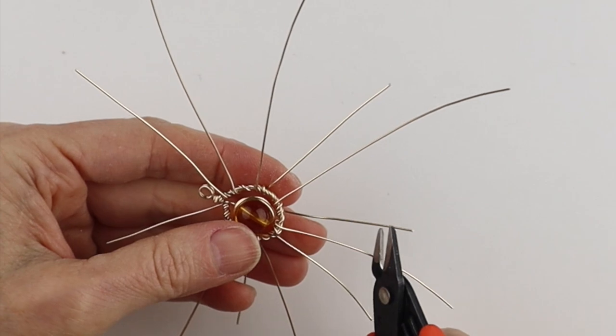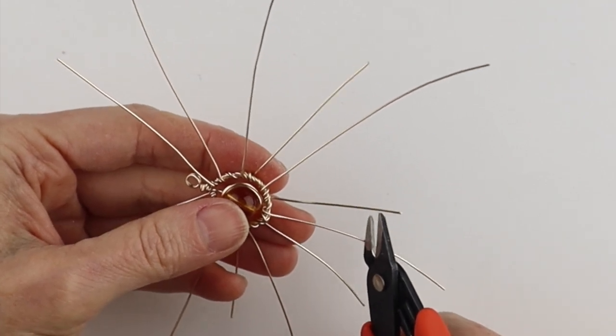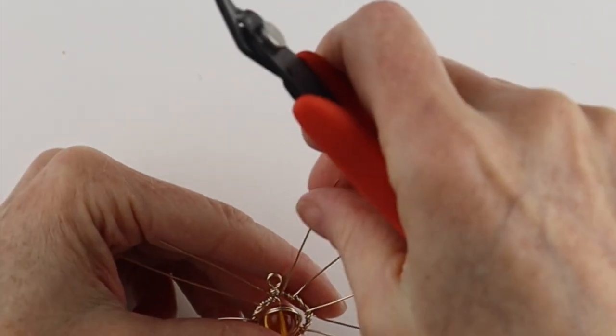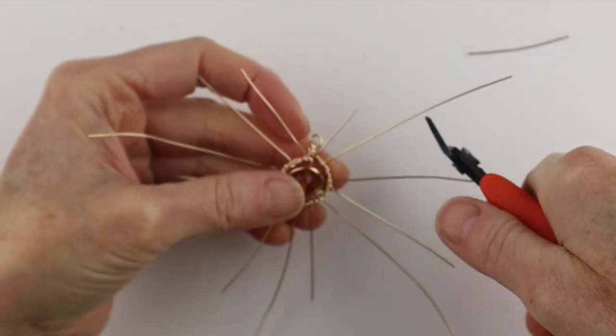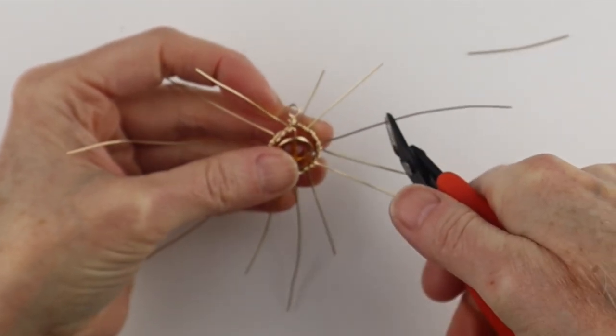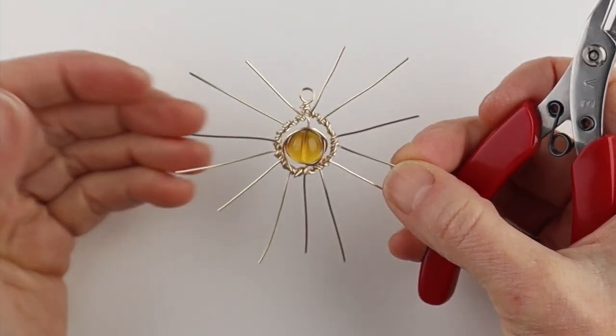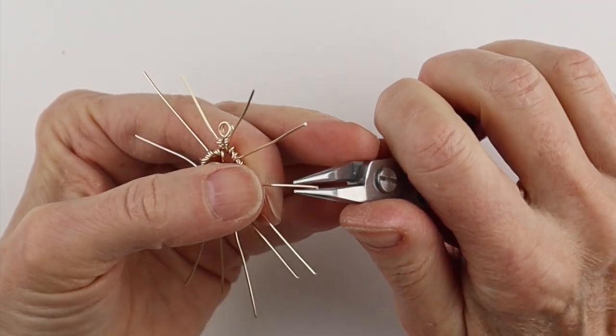Or we can take this one and just trim the edges. So we can do some long, some short. Let's say an inch, a little more. So once you have that, you can add beads to the ends.